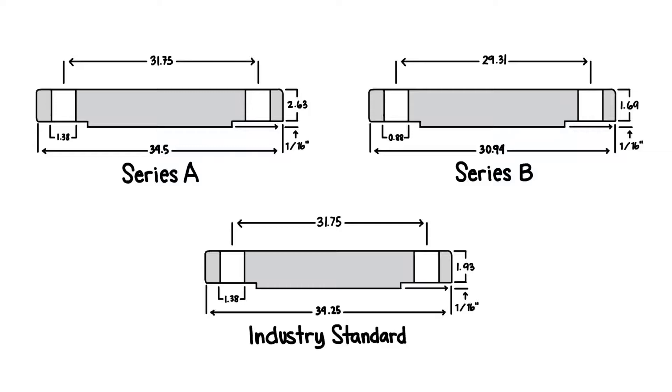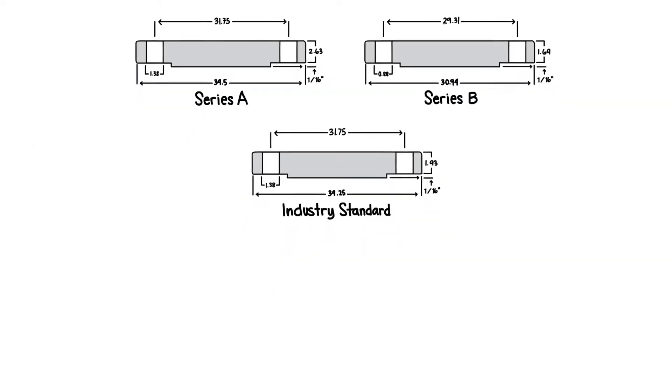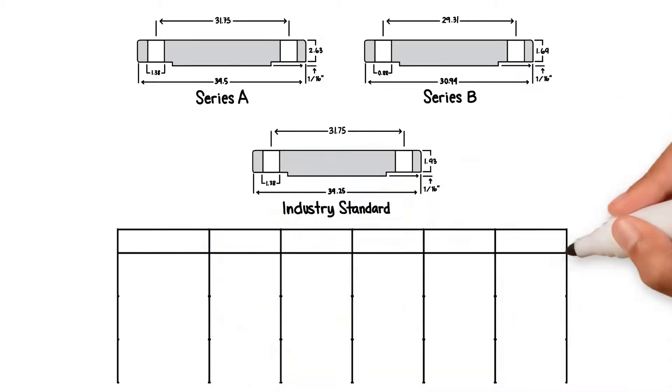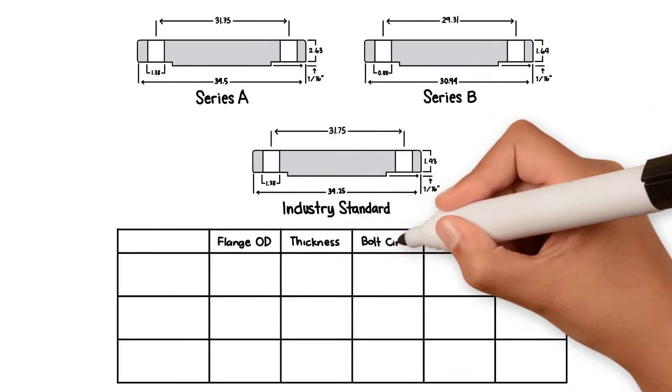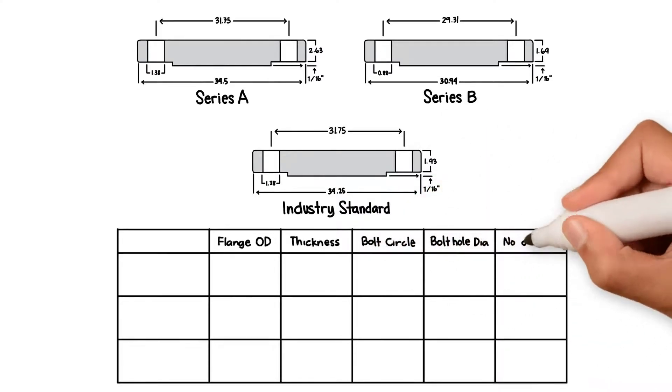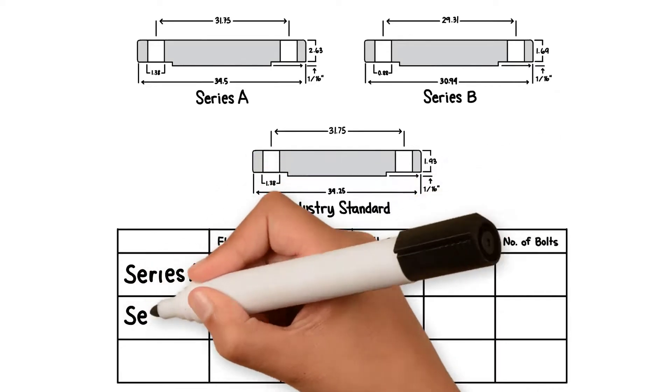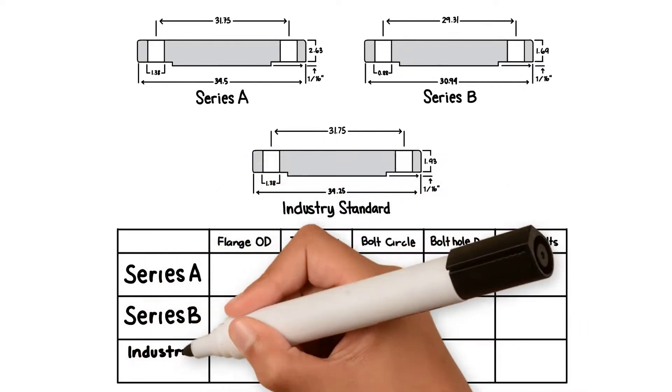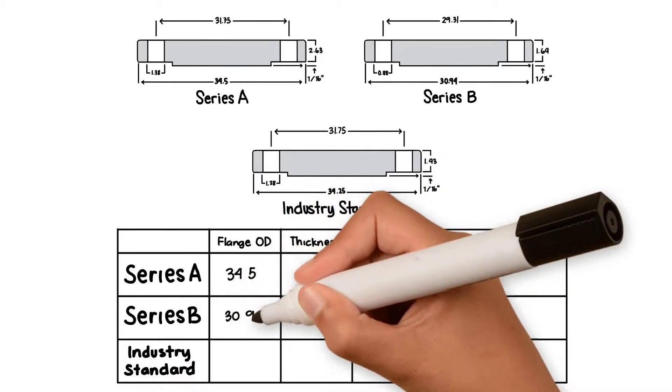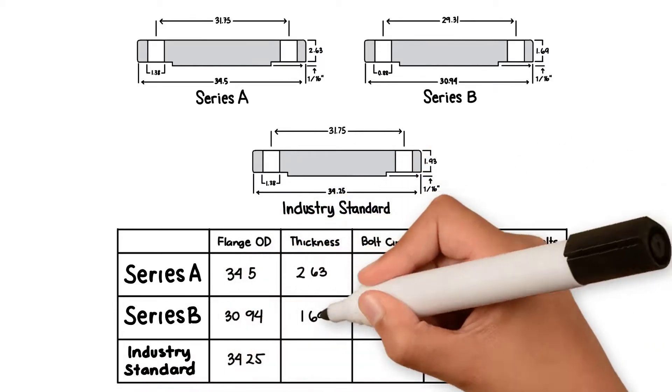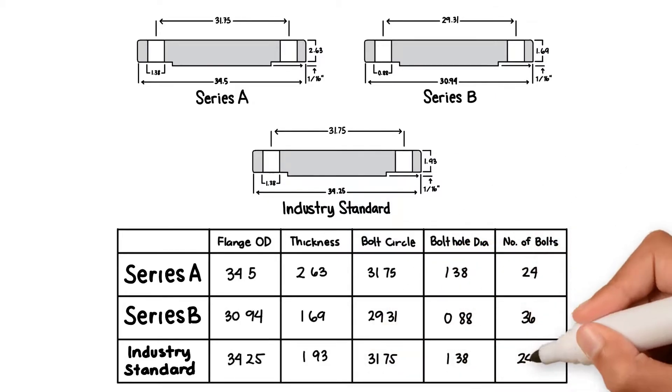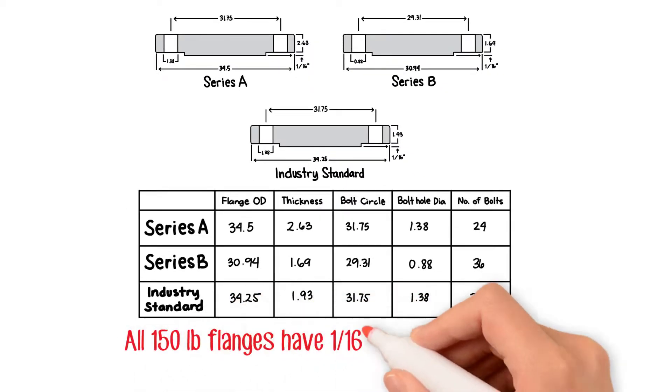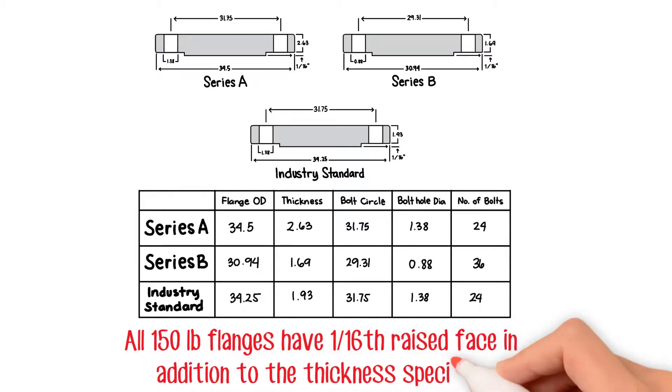Let's take the same 26-inch flange in industry standard now. Closest to 150-pound will be 125-pound flange, since industry standard flange does not come in true 150-pound for a blind flange. For industry standard class 125 blind flange, the OD is 34.25 inches, thickness is 1.93 inches, bolt circle is 31.75 inches, bolt hole diameter is 1.38 inches, and the number of bolts are 24. All 150-pound flanges have 1.16 raised face in addition to the thickness specified.